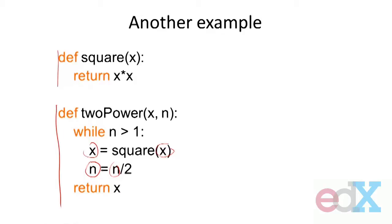So I'm going to square x and reduce n by a factor of 2. It's like saying x to the n is the same as x squared to the n over 2, which is the same as x squared squared to the n over 4. It's just giving me a quick way of doing that computation. When I'm done with the loop, I'll just return the value of x.